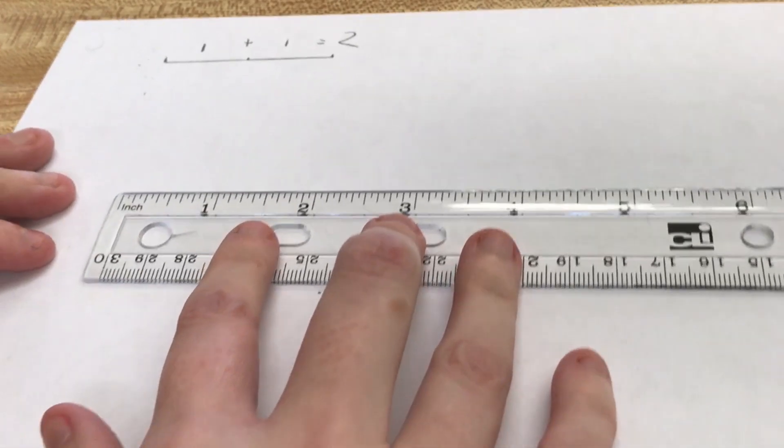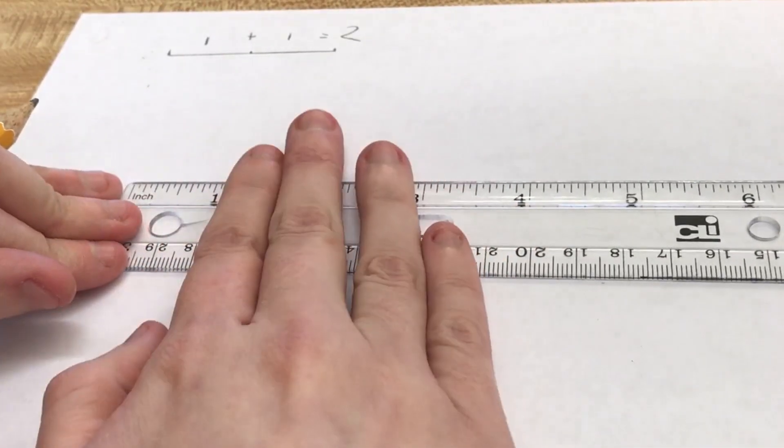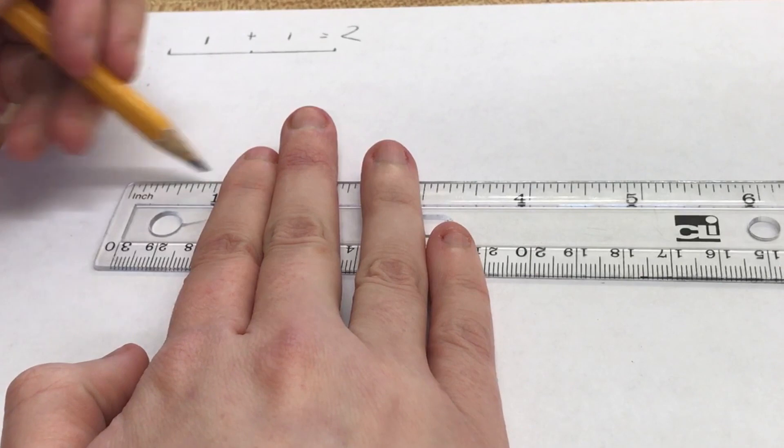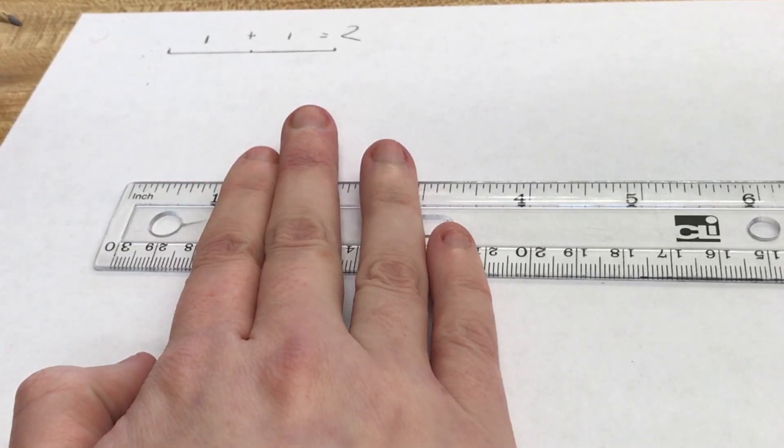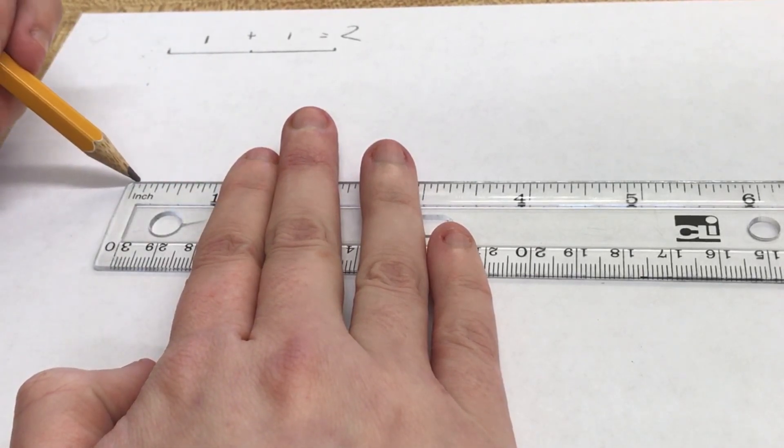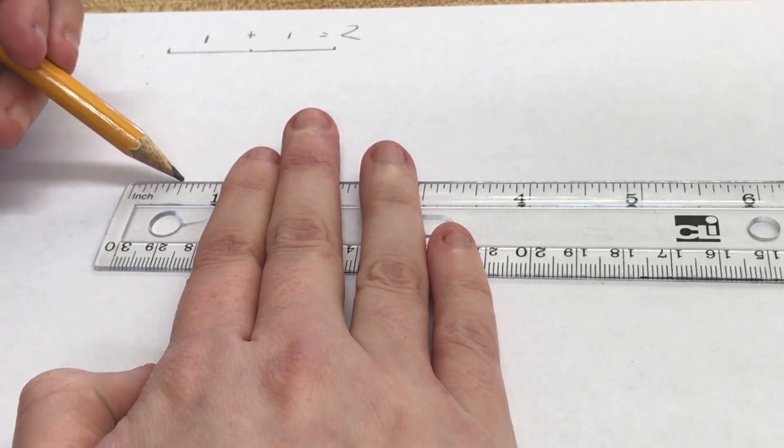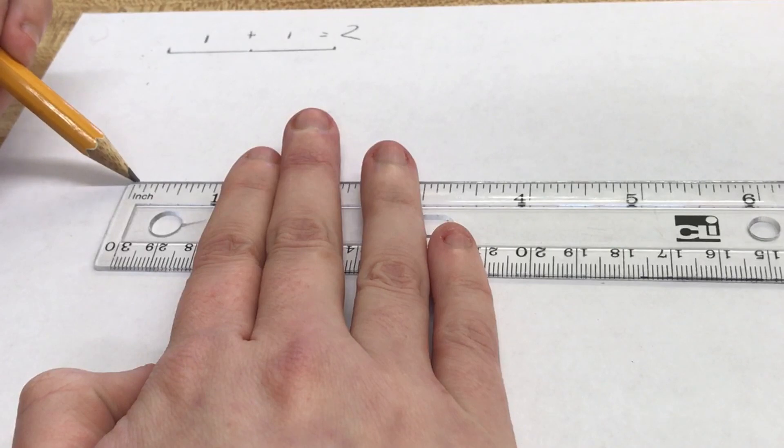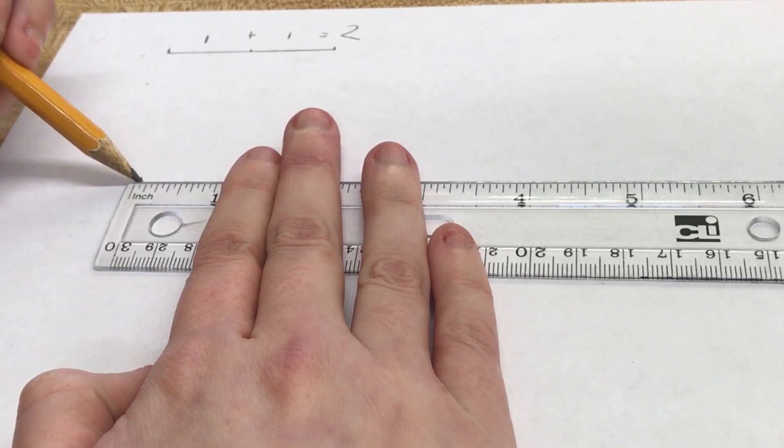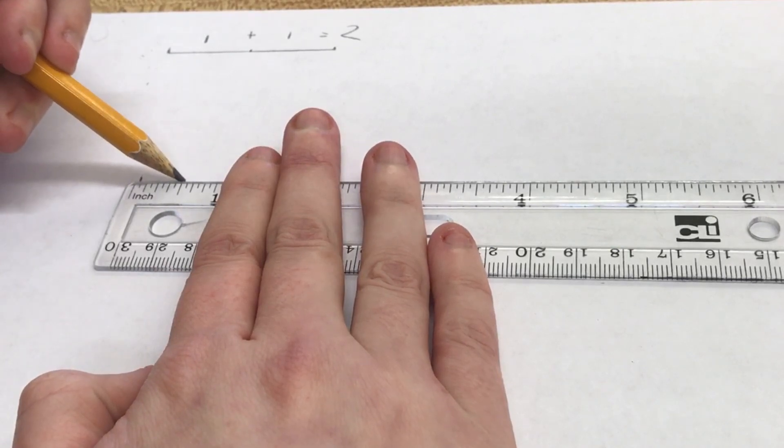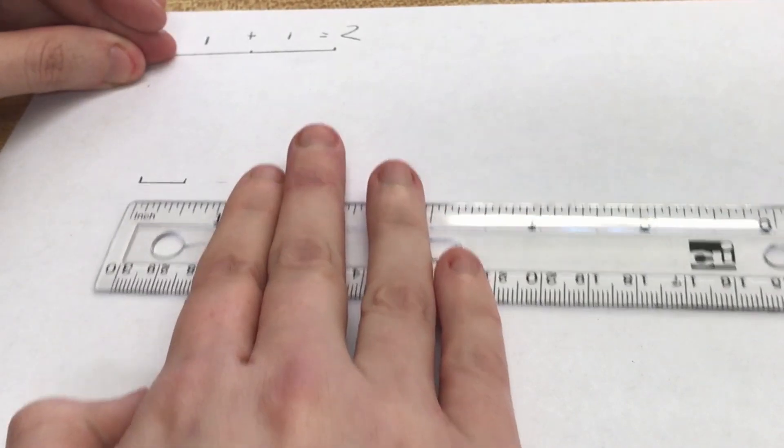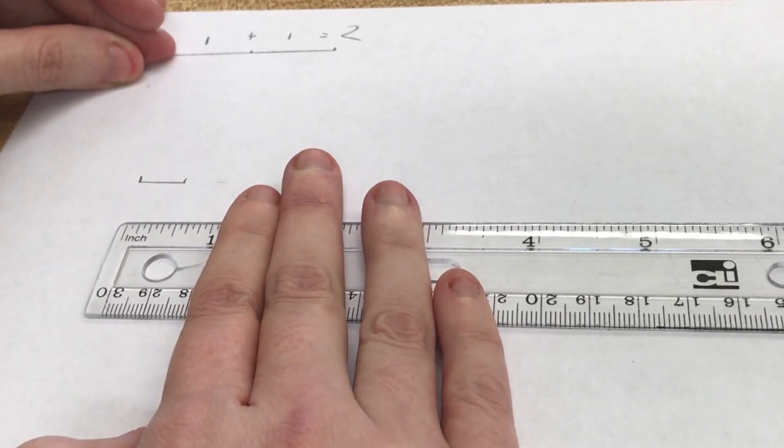Well, there are measurements that are underneath one inch. If I told you to draw half an inch, if this is a whole inch, and I wanted you to draw only half of it, you would start at the zero and go to that longer line right there. That is half of an inch.